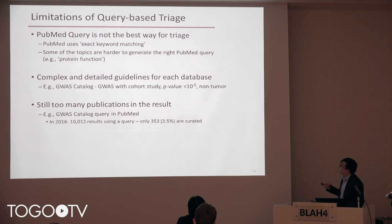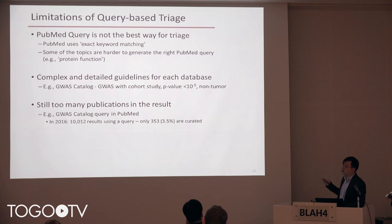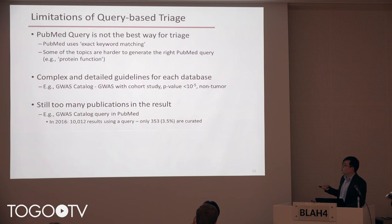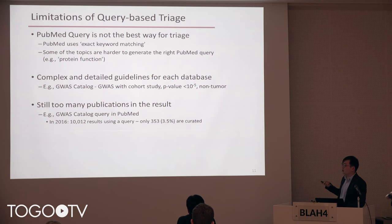A lot of databases have complex and detailed guidelines. For example, the GWAS Catalog focuses only on GWAS cohort studies where the p-value should be under a certain threshold, and it should be non-tumor related research. Even with queries, there are too many publications in the results — in 2016, GWAS Catalog's query returned 10,000 results, but only 353 were actually curated that year.